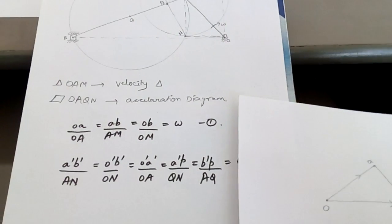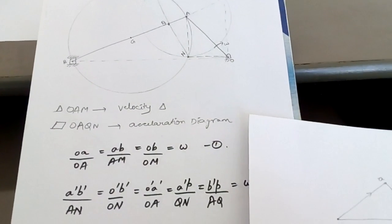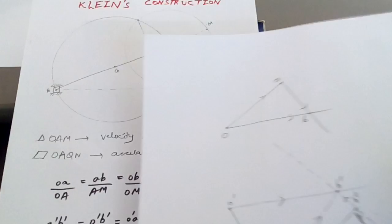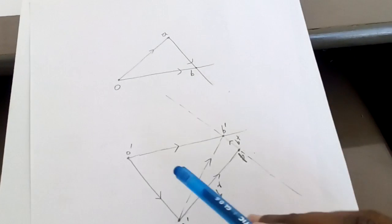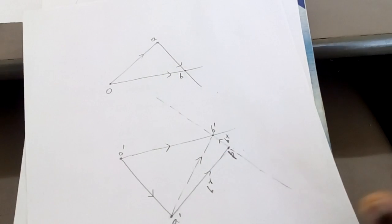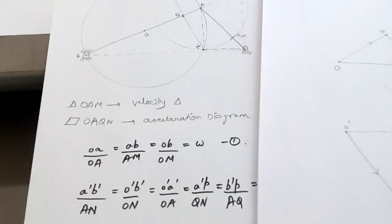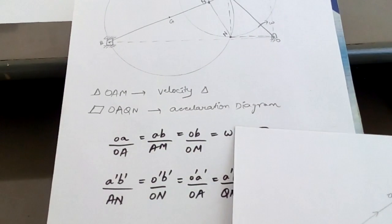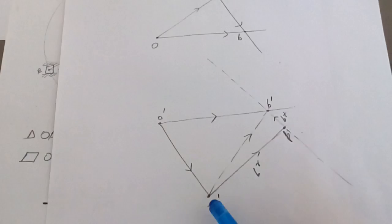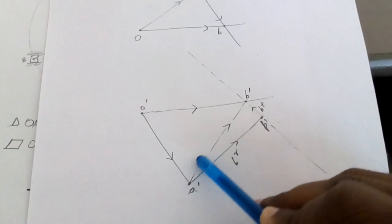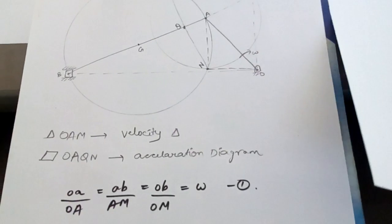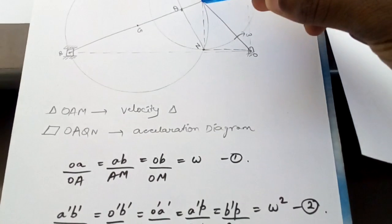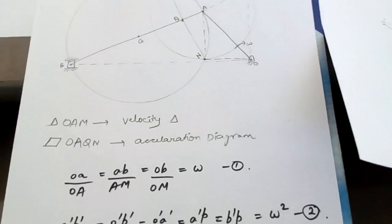If you have any doubt please mention in the comments. Now for the acceleration diagram, quadrilateral O-A-Q-N is similar to quadrilateral O'-A'-B'-P. Using the similarity concept: A'B' / AN = O'B' / ON. This gives the ratios for the acceleration components.